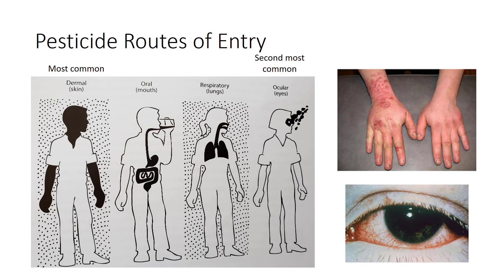Ocular exposure is the second most frequent type of pesticide injury; wearing protective eyewear can protect the eyes. Oral exposure usually occurs accidentally, for example by drinking out of a container that has had a pesticide stored in it. It also occurs through splashing of spray materials and pesticide dust into the mouth, by eating or drinking contaminated foods or liquids, or by smoking while handling pesticides. Inhalation exposure occurs if dust, mists, or vapors are inhaled during mixing or application. Inhalation or respiratory exposure is particularly hazardous because pesticides are quickly absorbed by the lungs and transported in the bloodstream to other areas of the body.